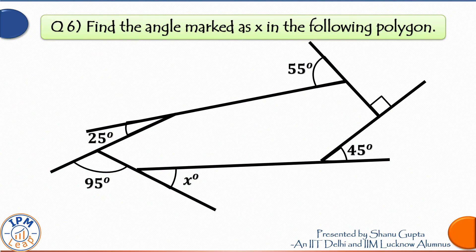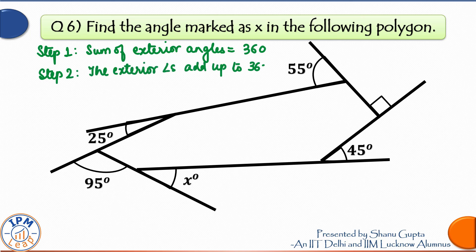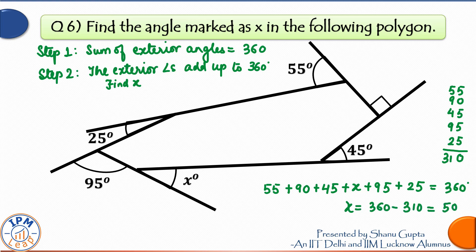In the next figure we are given exterior angles of a polygon and have to find the missing angle. The sum of exterior angles is always 360 degrees for any polygon — you don't even need to count the sides. Adding the given exterior angles: 55 + 90 + 45 + x + 95 + 25 = 360 degrees. The known values add up to 310, so x = 360 − 310 = 50 degrees.